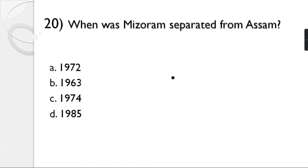Question number 20: When was Mizoram separated from Assam? Options: 1972, 1963, 1974, 1985. The correct answer is option A — 1972.